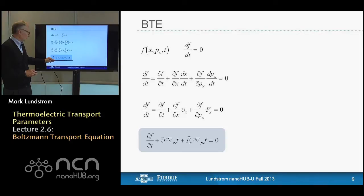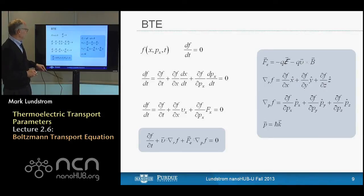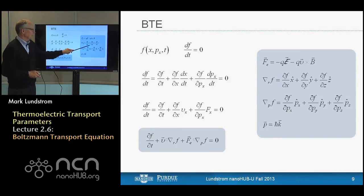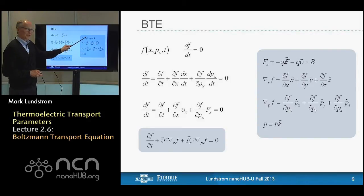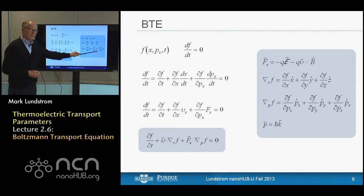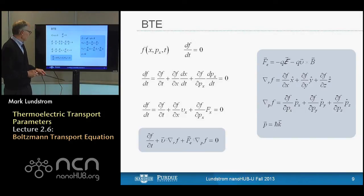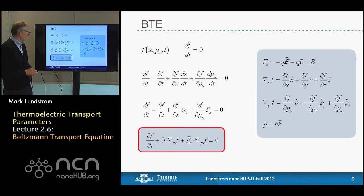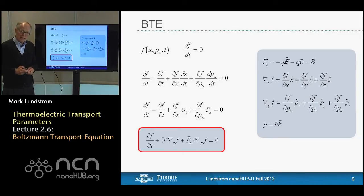If we solve these semi-classical equations of motion, beginning with an electron located initially at some position and momentum, we can track its trajectory through this two-dimensional phase space. Semi-classically, we simultaneously specify both the position and the momentum. The probability that the upstream state was occupied is going to be the probability that the downstream state is occupied a small time dt later — so we simply look upstream on the trajectory.